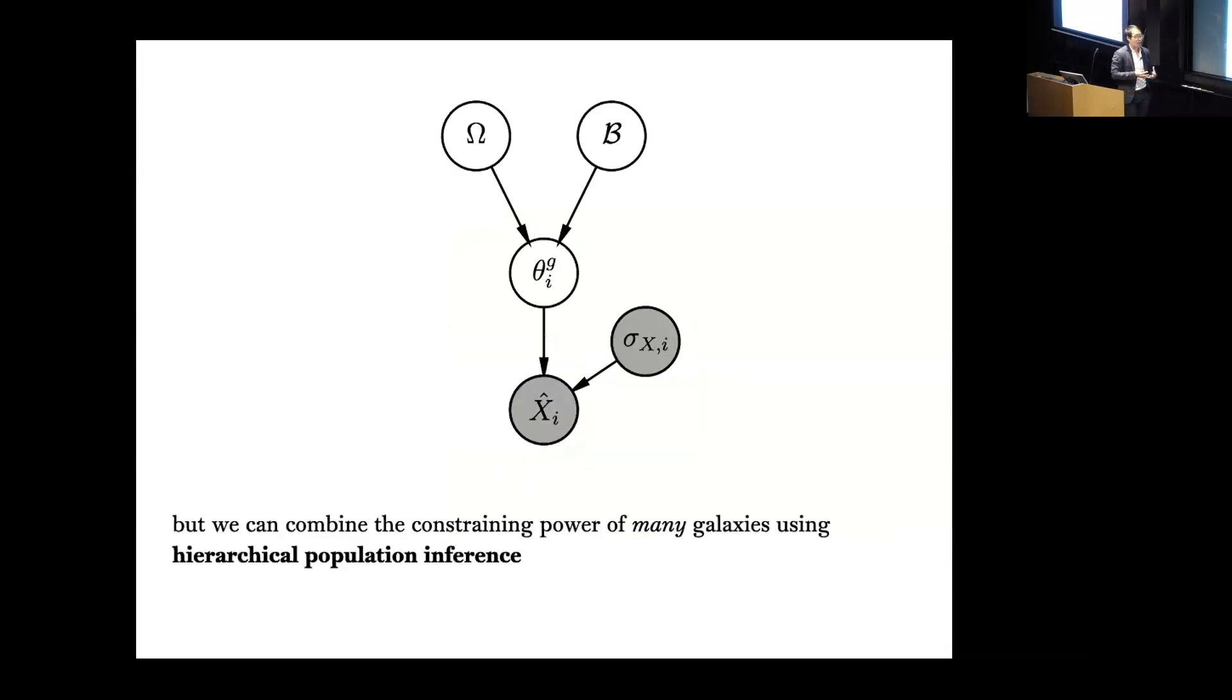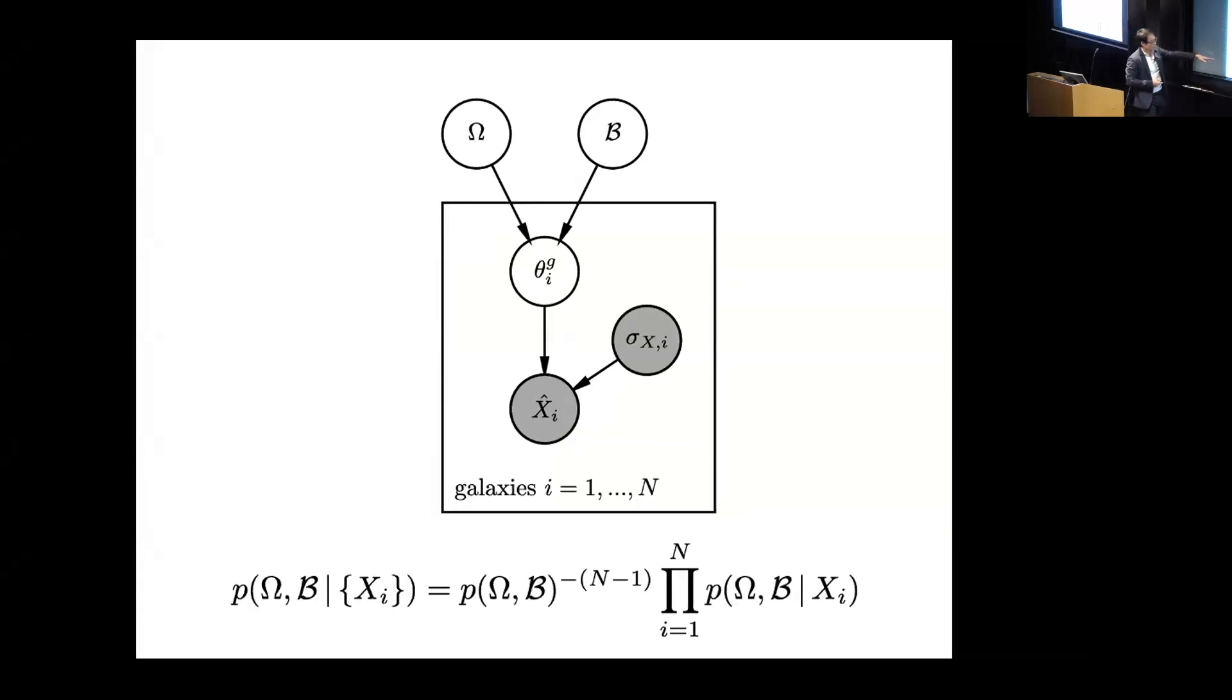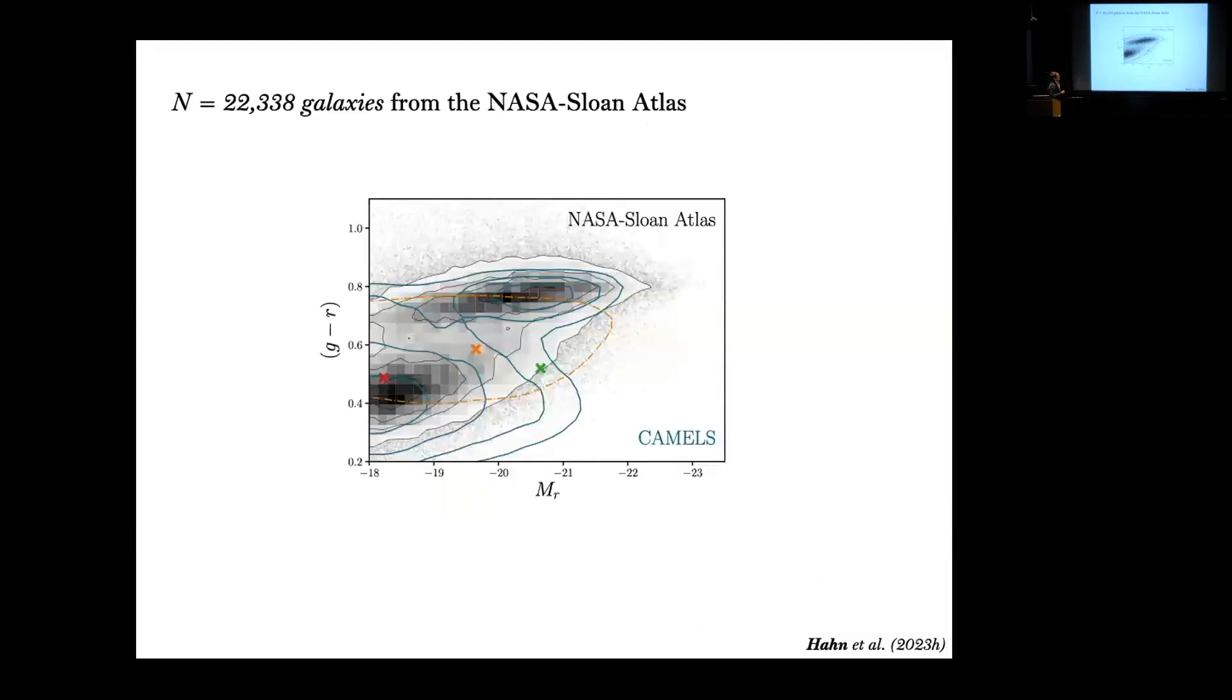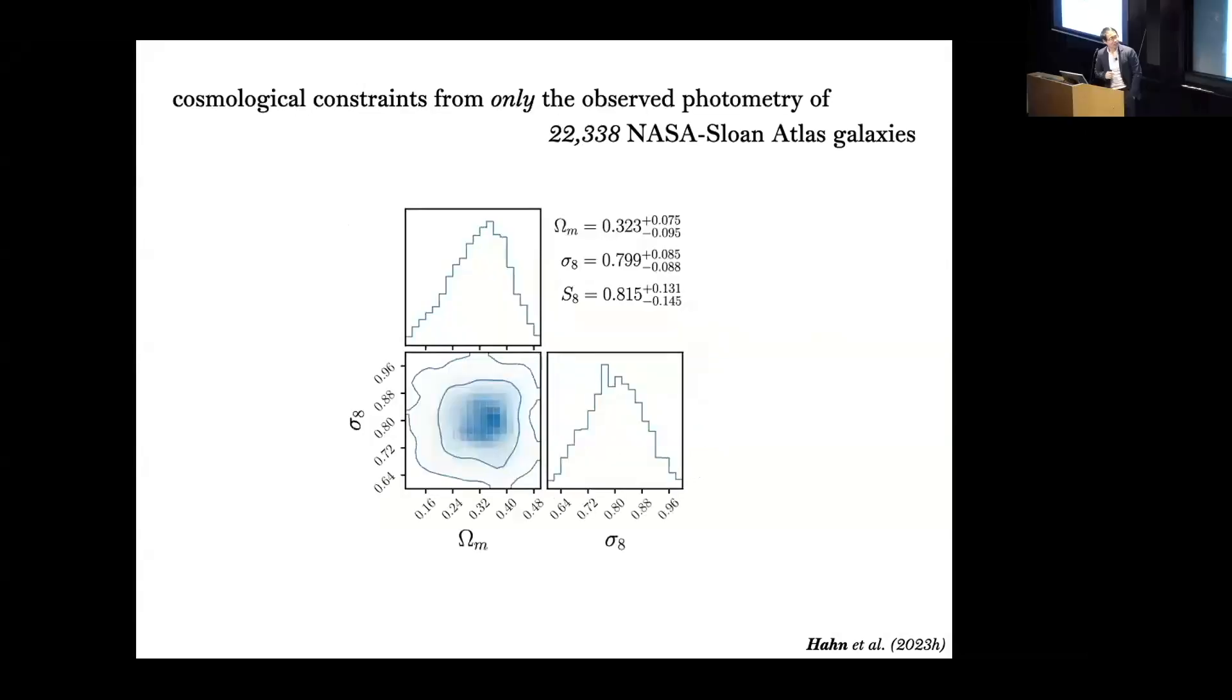What that means is since there's some information per galaxy, we can combine the constraining power of many galaxies using population inference. You can write down the posterior of the parameters given a set of galaxy photometry as the following expression. Then we can apply this into this framework to an actual observational data set like the galaxies in the NASA Sloan Atlas. I'm showing you here the color distribution of these galaxies in black and we're selecting these objects in the orange. We can apply this to 22,000 different galaxies. When we do this, here's the posteriors that we're actually able to derive. This is the constraints we get on omega matter and sigma 8 using just galaxy photometry alone. This is not using any of the positional information that was used for instance by SIMBIG or galaxy clustering analysis, so this is a completely independent constraint from that.